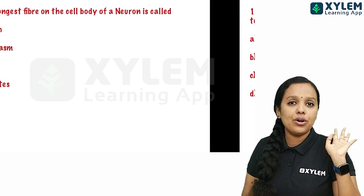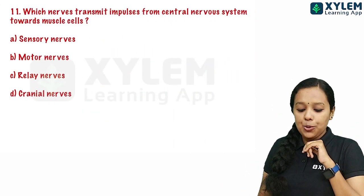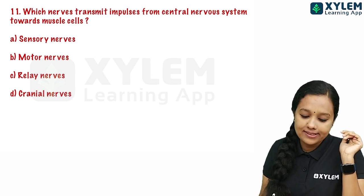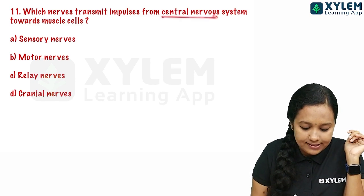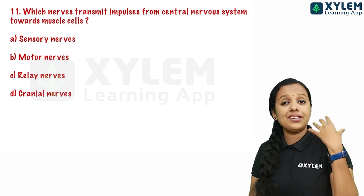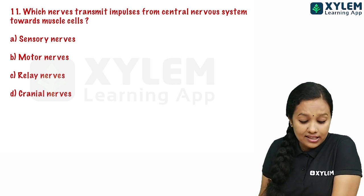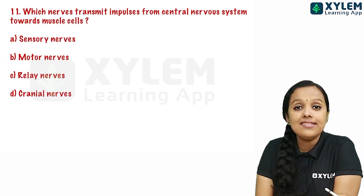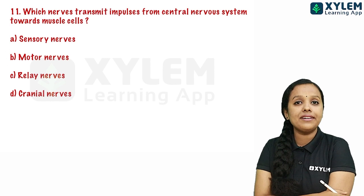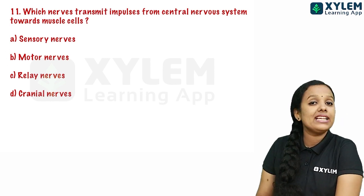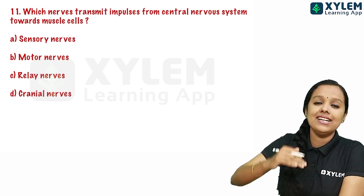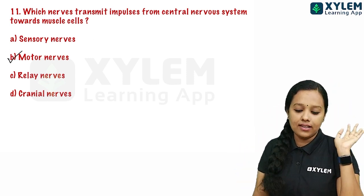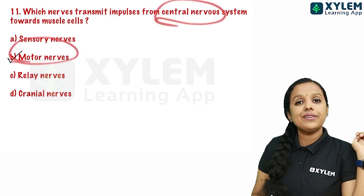The eleventh question: which nerves transmit impulses from the central nervous system towards the muscle cells? These instructions go from CNS to muscles. The correct answer is Option B: motor nerves.